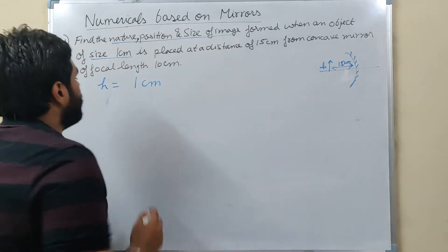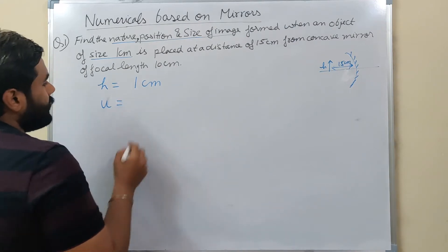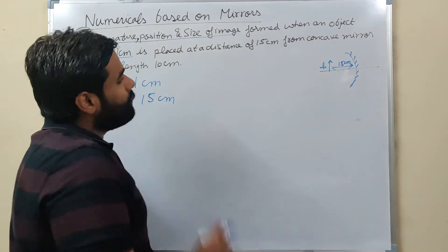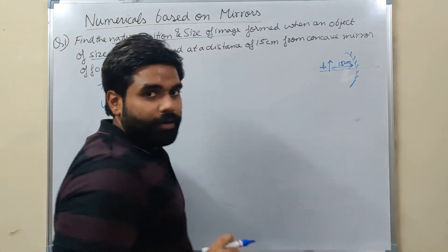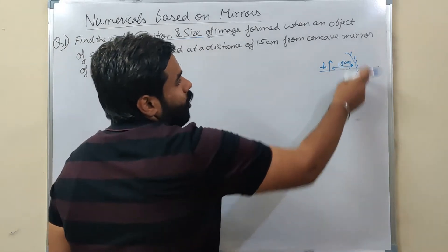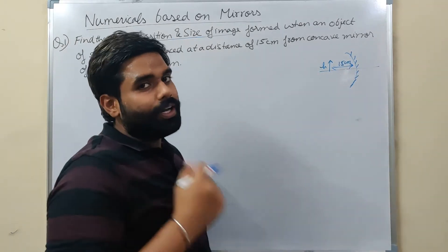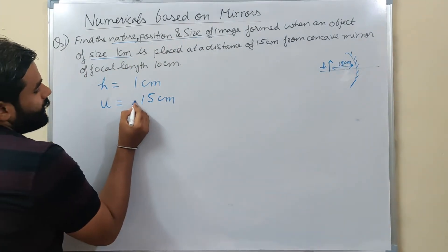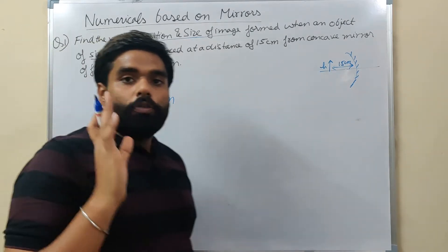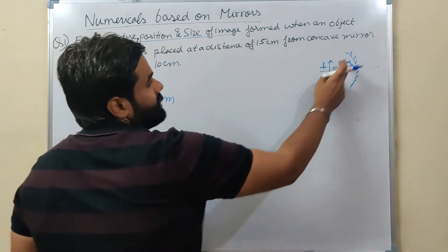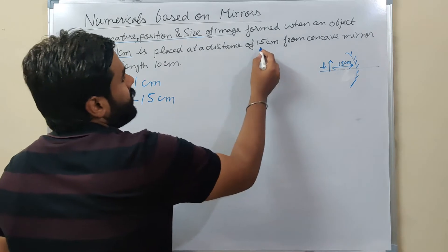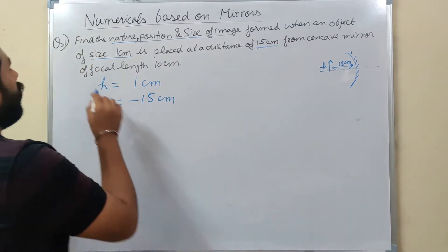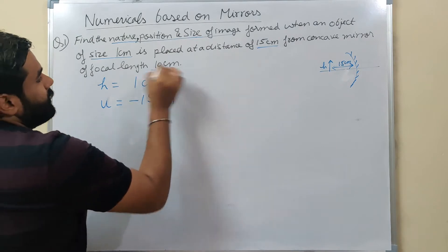So the object distance u is 15 cm. Writing units is very important - without units, marks will be deducted. Now the object is to the left of the concave mirror, so by sign convention u = -15 cm. We apply sign convention before the formula itself.